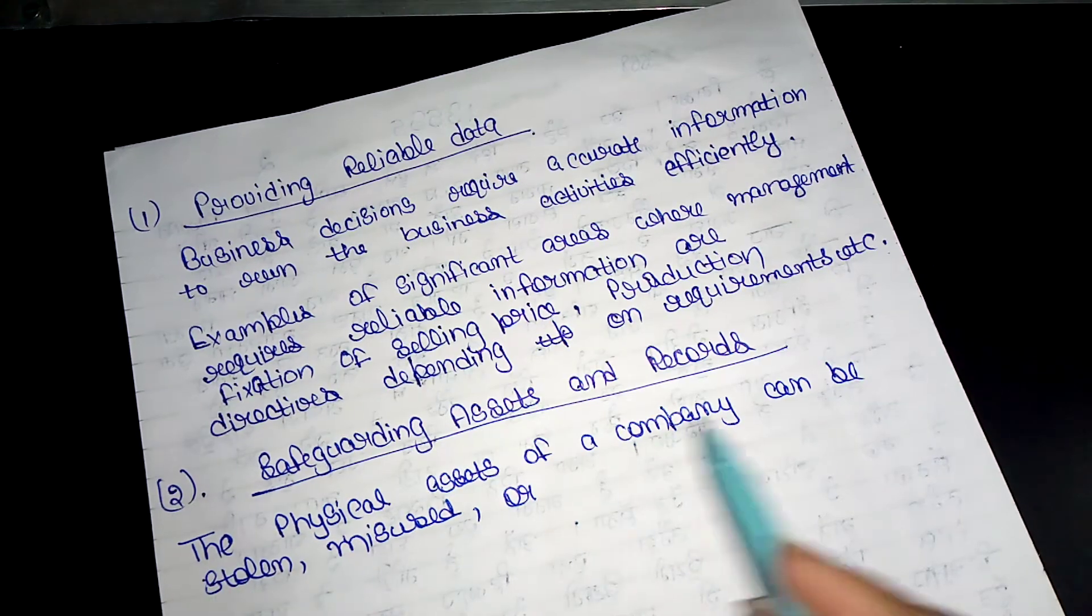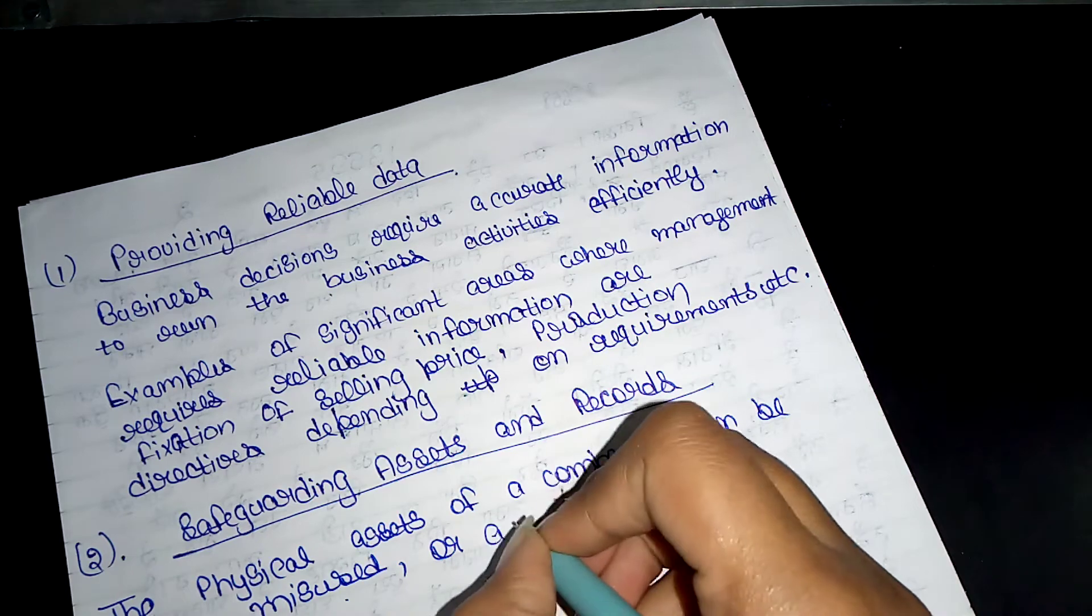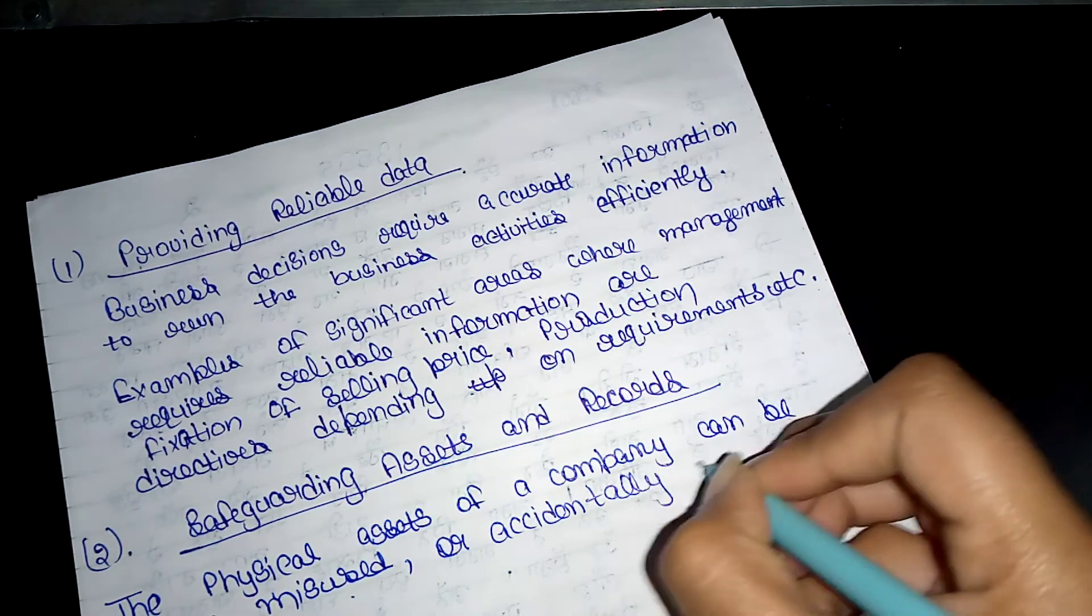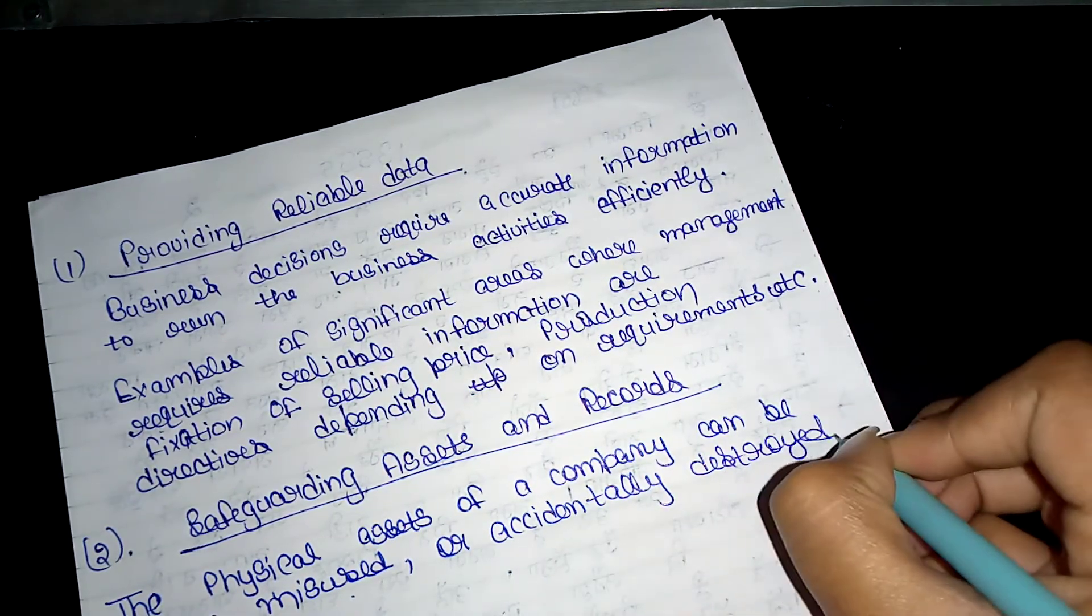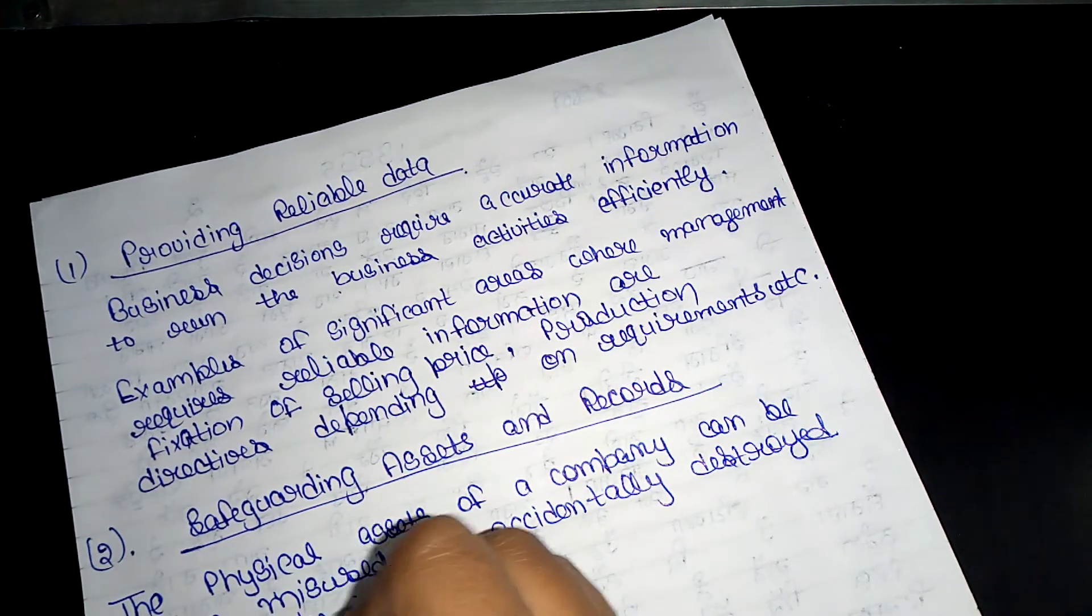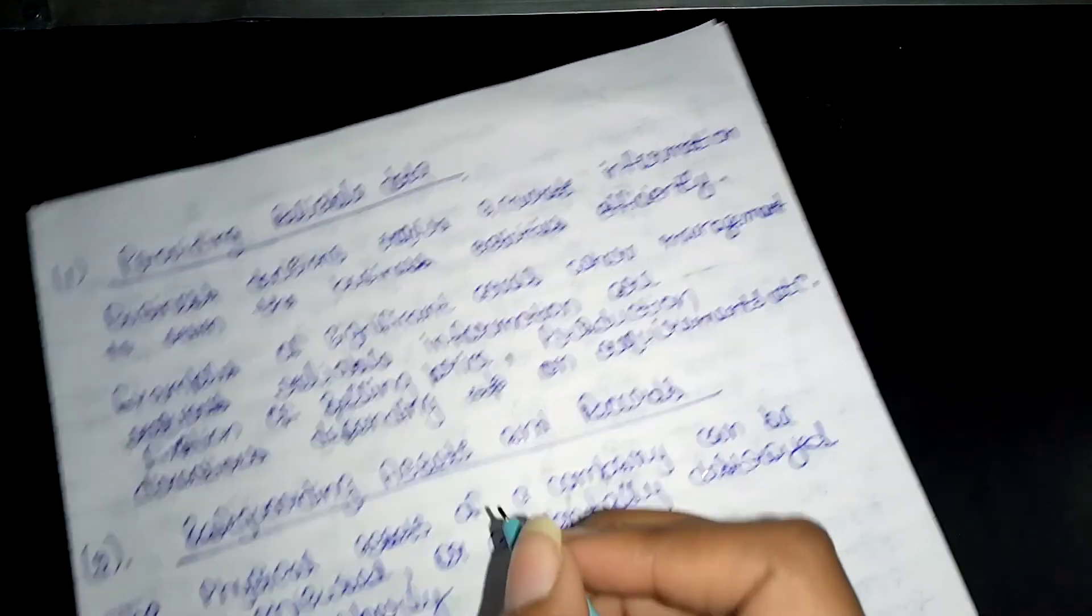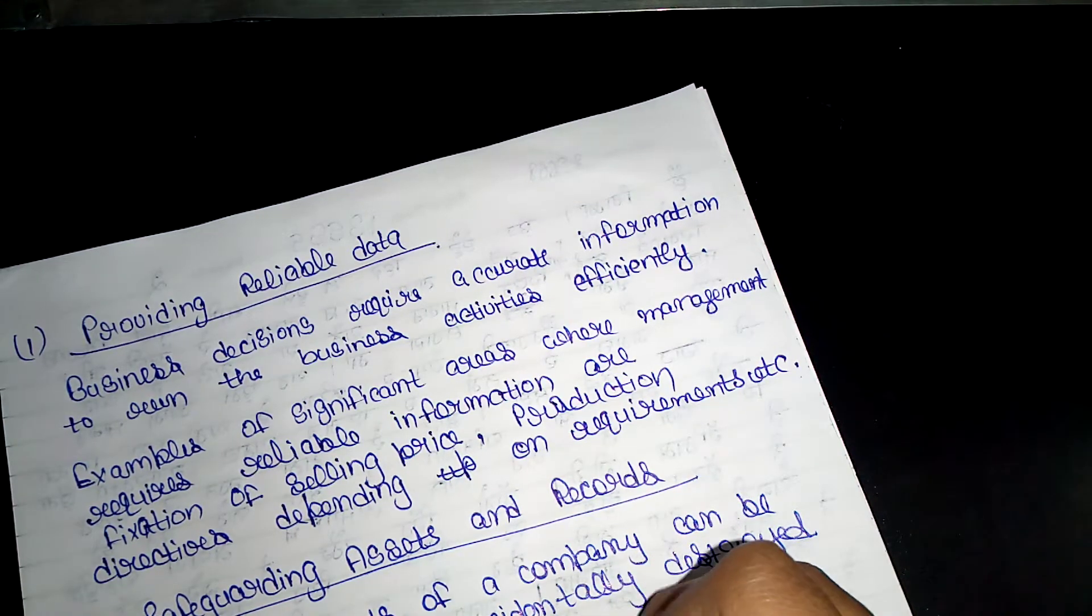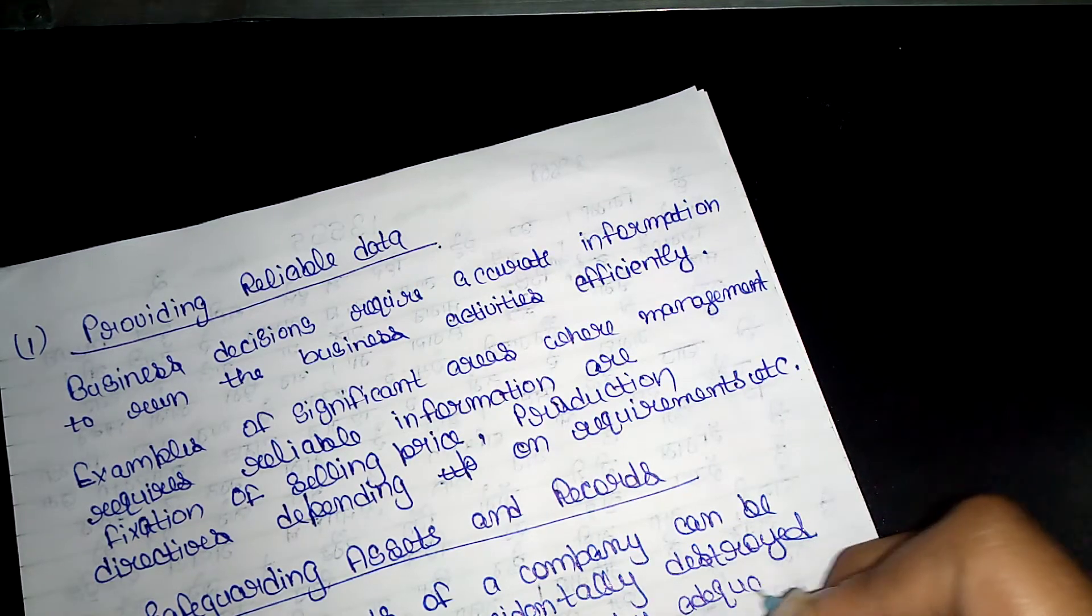The physical assets of the company can be stolen, misused, or completely destroyed accidentally if not properly protected by adequate controls.